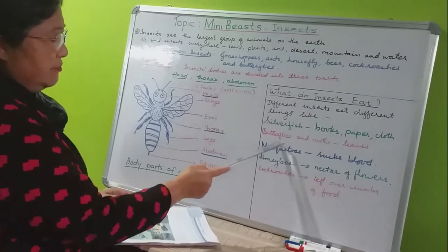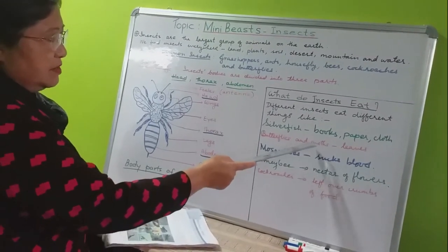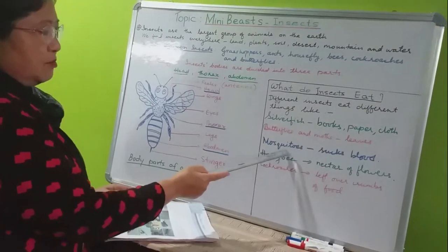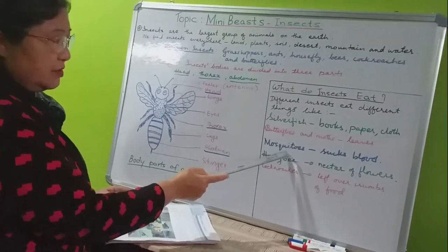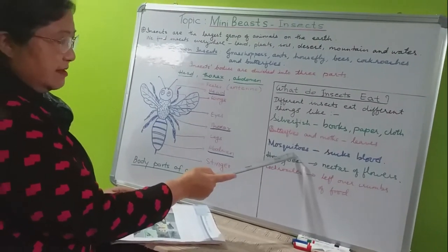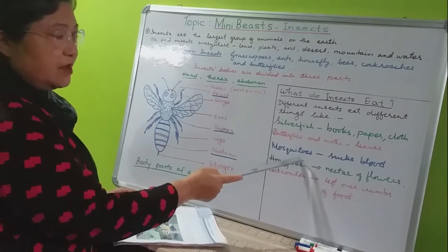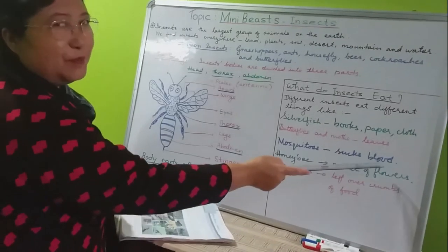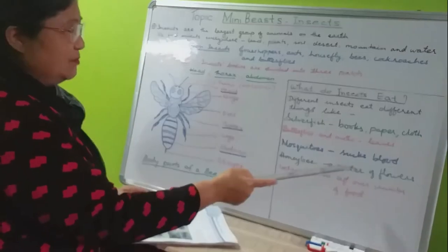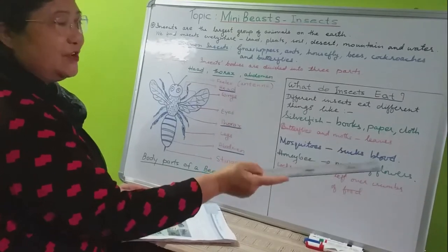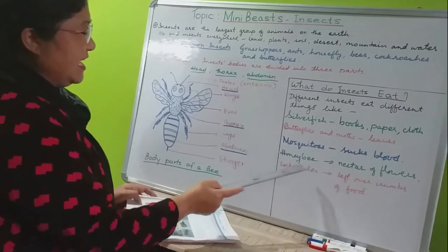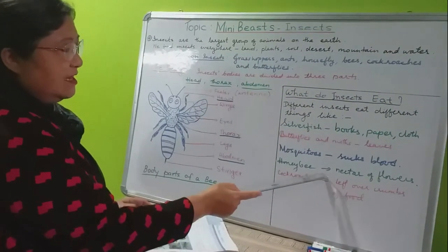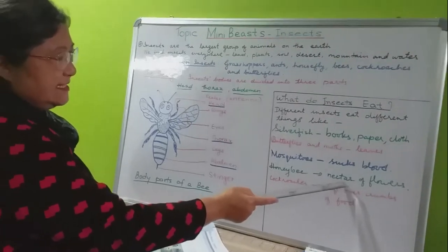Next are butterflies and moths. You all know them very well — they love to eat leaves. Next, mosquitoes — you know, they especially come at night and suck your blood. They love to suck children's blood especially.